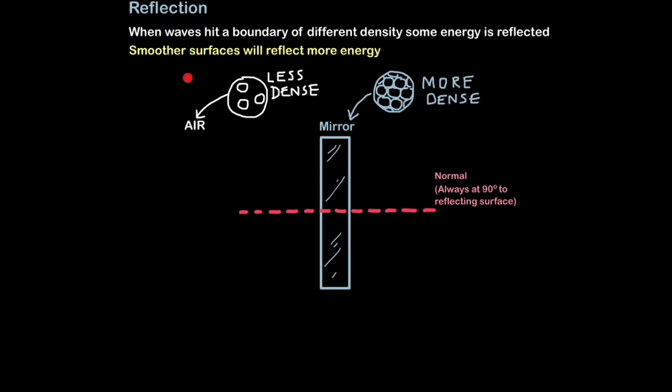Here, air represents a less dense medium because the particles are more spread out, and mirror represents a more dense medium because the particles are compacted close together because it's a solid as opposed to a gas. So density is a measure of how much matter is crammed into a fixed volume of space. So air less dense, mirror more dense.